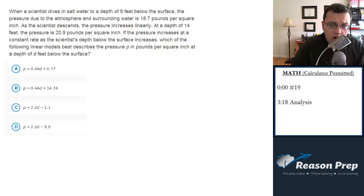When a scientist dives in salt water to a depth of 9 feet below the surface, the pressure due to the atmosphere and surrounding water is 18.7 pounds per square inch. As the scientist descends, the pressure increases linearly. At a depth of 14 feet, the pressure is 20.9 pounds per square inch.